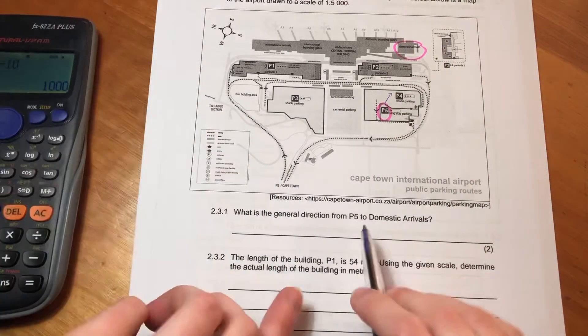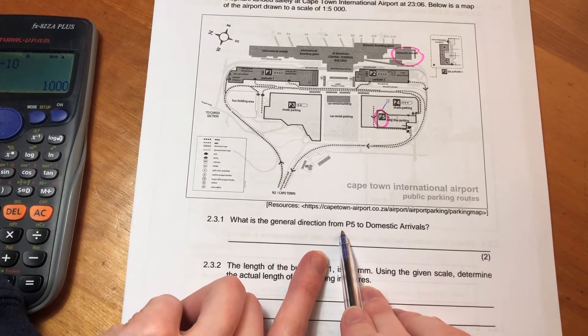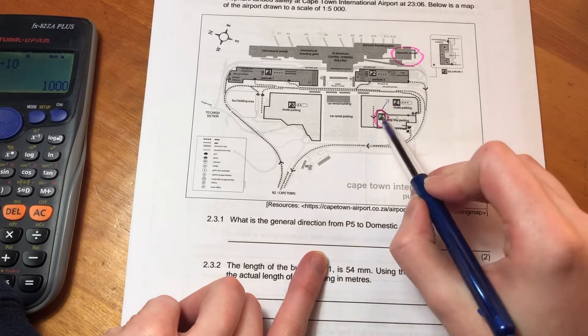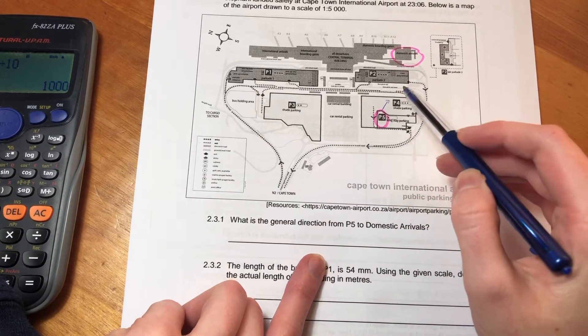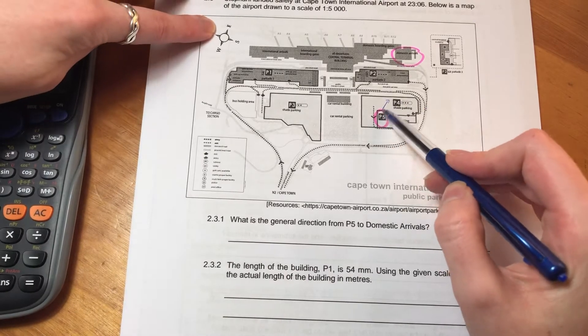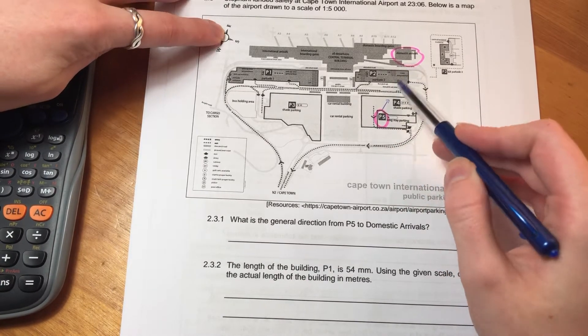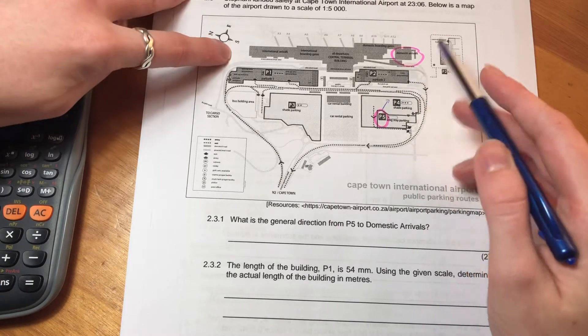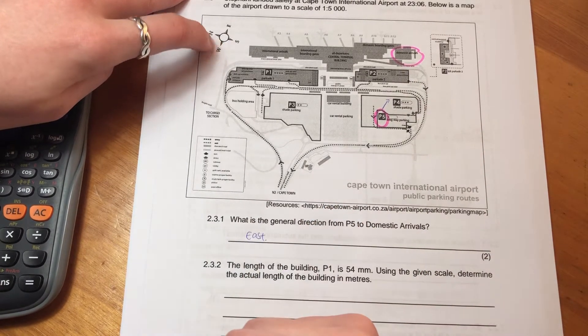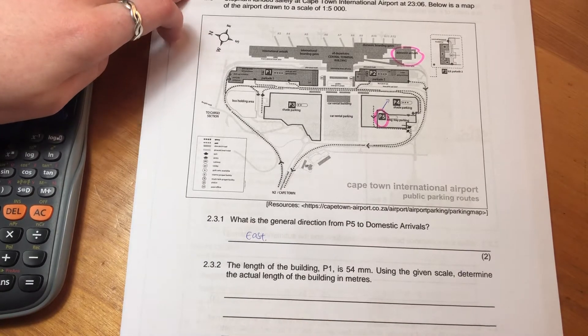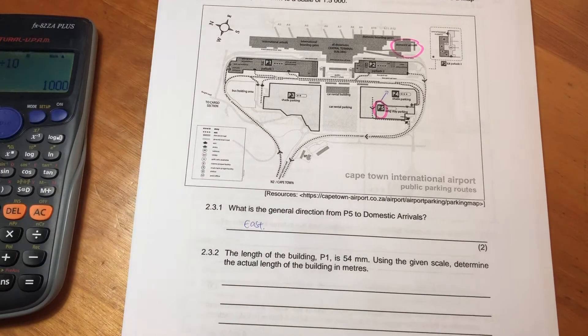So we are standing when it says from - that's where we're standing. So I'm standing at P5, and I'm looking over to domestic arrivals. So what direction am I looking at? It kind of looks like it's east. Do you see that? In the same direction as east based on our compass. So I'm going to say east. Perfect. So let's now go on to the next question.